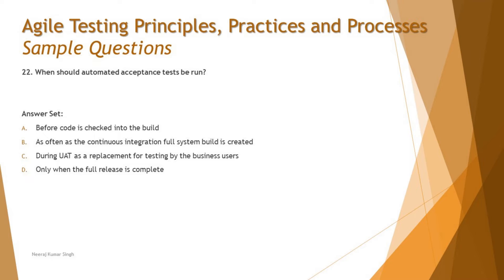A UAT phase would probably be done at a collection of sprints together. It's not necessary that your project is limited to one release — you may have two or three releases to complete a product. Acceptance testing can happen at each release, not just the final one. There is also a difference between acceptance testing and user acceptance testing, alpha, and beta — refer to the foundation level for more details. So C is not the right answer.